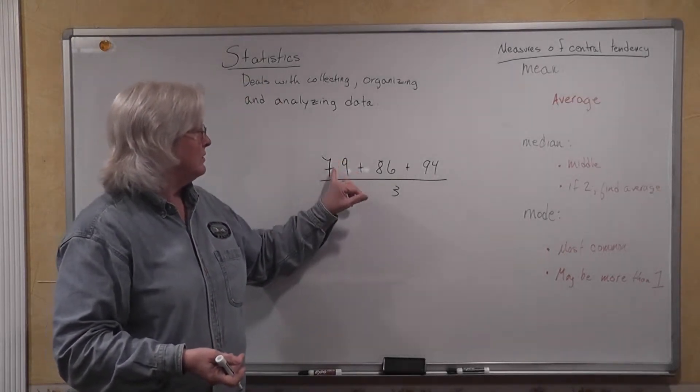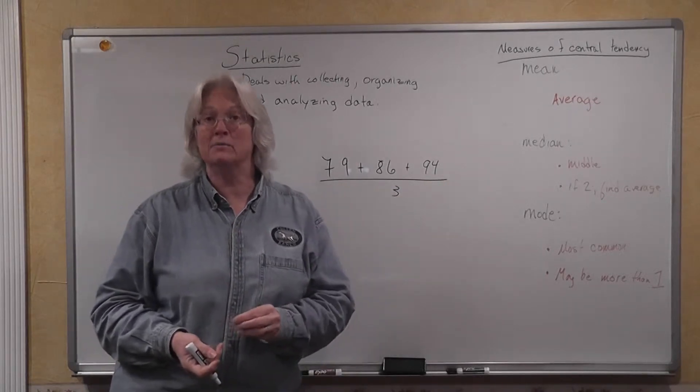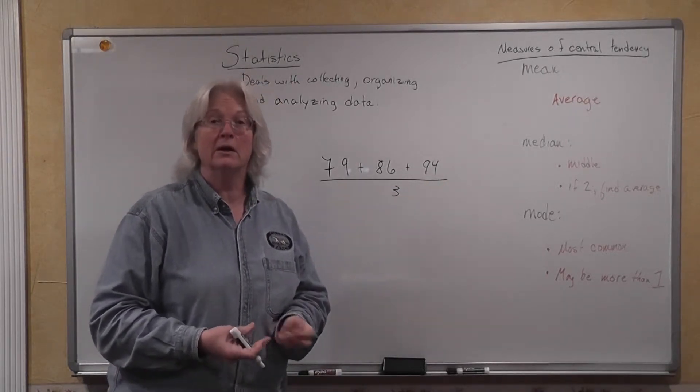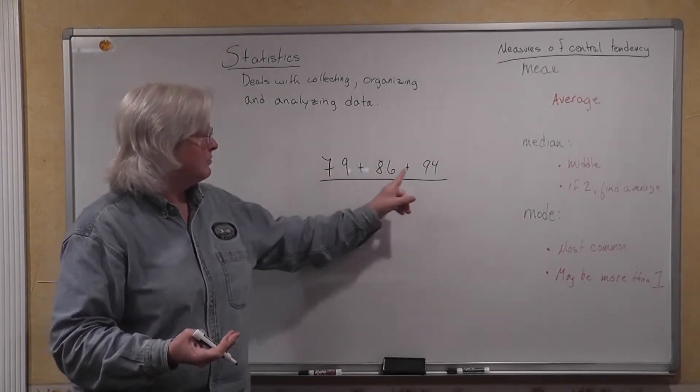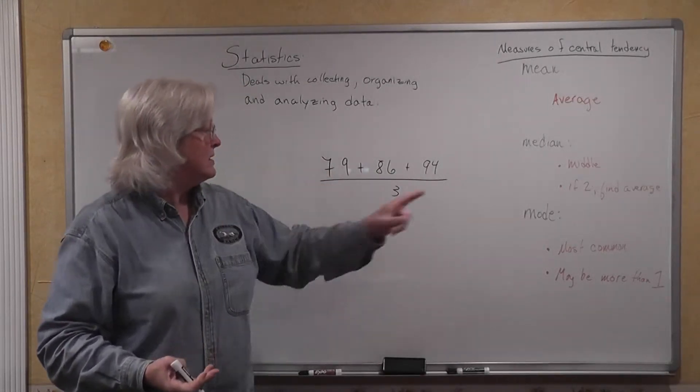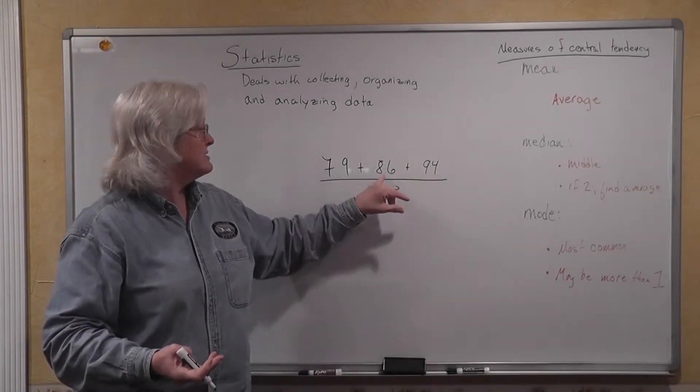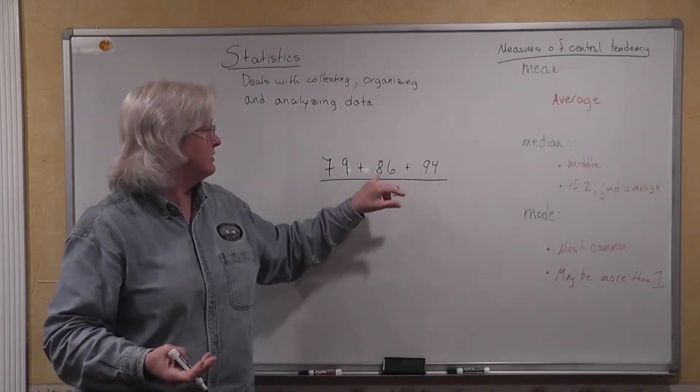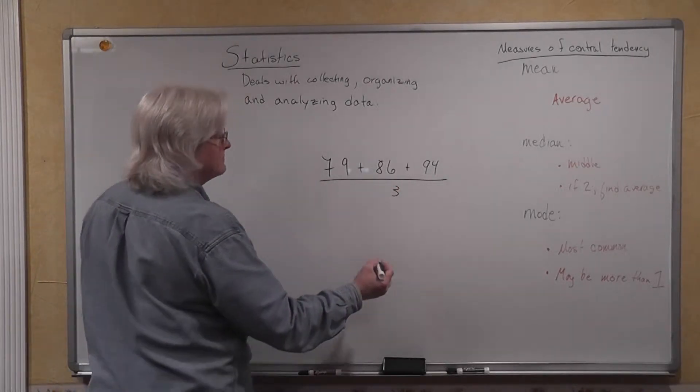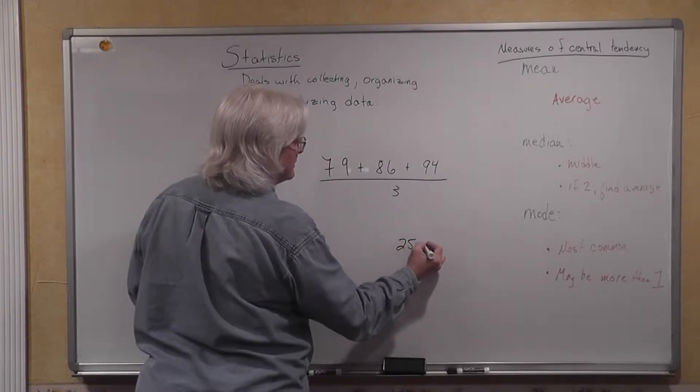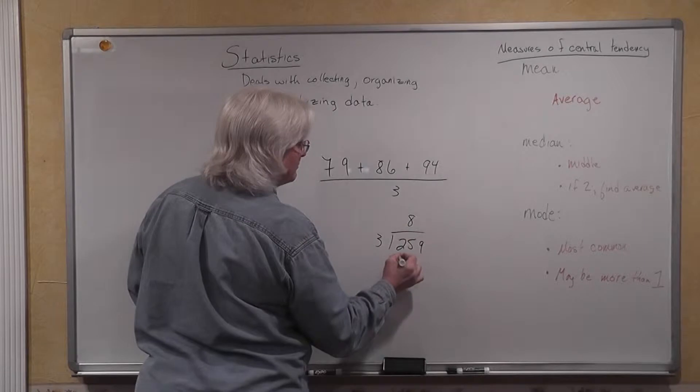To determine the mean, you add together all of the individual items, all of the individual pieces of data, and you divide that sum by the total number of pieces of data. So what would we have here? 86 and 94 is 180, and 79 is 259. We would divide that by three, 259 divide by three, three-eighths are 24,